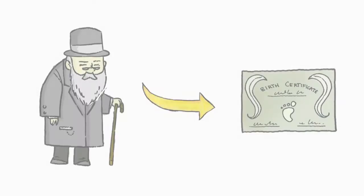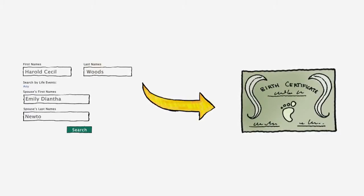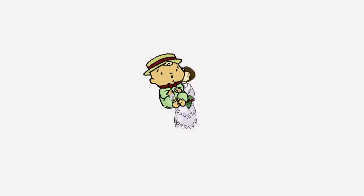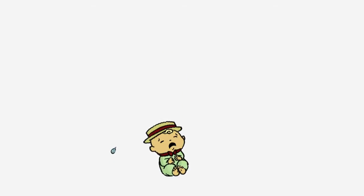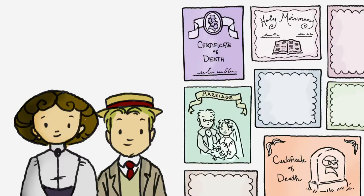For example, if you're trying to find a person's birth certificate, don't enter that person's spouse's name in the search, because the baby won't have a spouse when the birth certificate is made. The search tools will look for documents with both names on them, and the birth certificate won't show up.